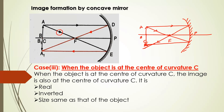Because I am not drawing it with a scale, it might go slightly off the point. But if I draw it correctly, the image comes at C only. The image A'B' is exactly the same size as the object. It is a real and an inverted image. So that is our third case.